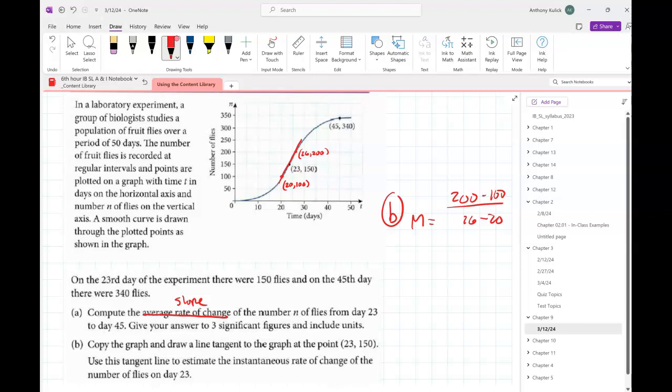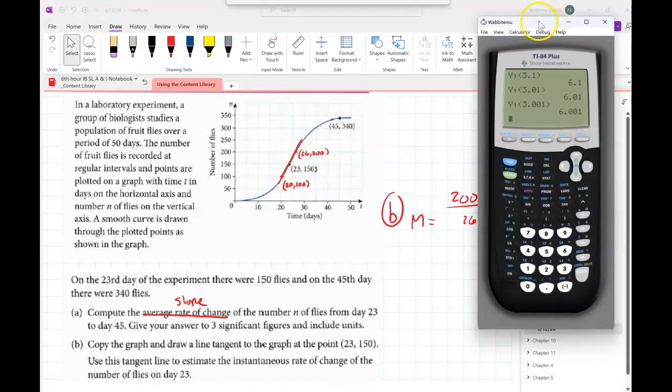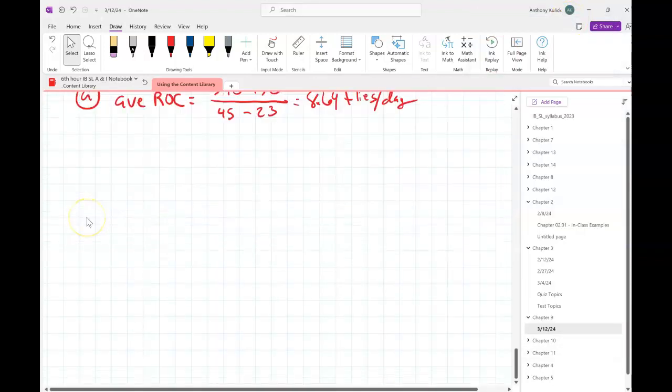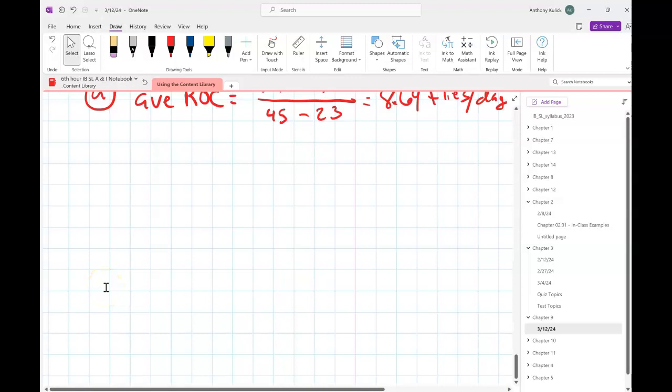It says copy the graph and draw a line tangent to the graph at the point 23, 150. Use this tangent line to estimate the instantaneous rate of change of flies on day 23. So there's my tangent line. Looks like maybe I have the point 20, 100, and then this one might be 26, 200. So for Part B, I might say that slope should be 200 minus 100 over 26 minus 20. Is everybody okay with what I did there? There'd be some flexibility there. Here's the good part: I think in like one more section, we're going to start learning algebraic ways to do this so we don't have to do this guess and check kind of graphically, because it's stinky.